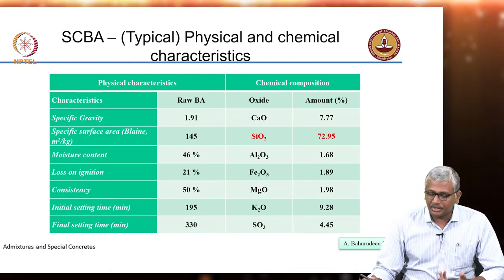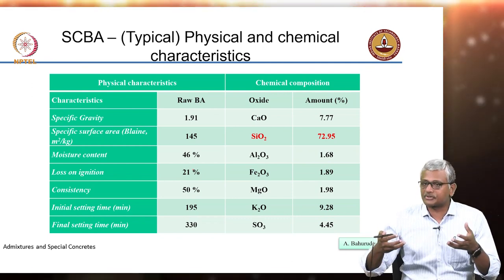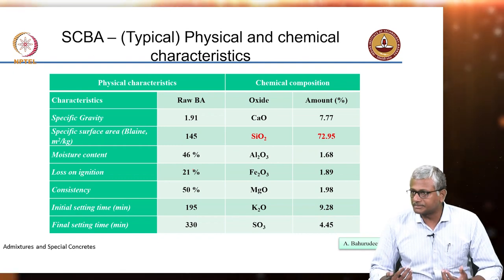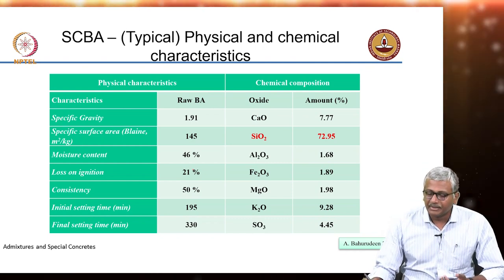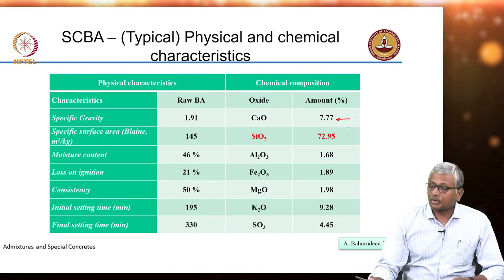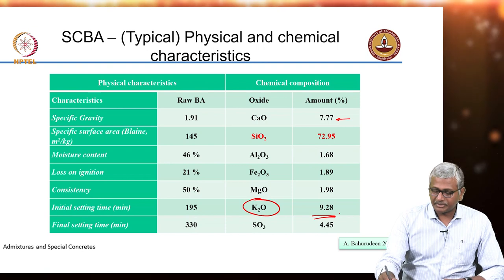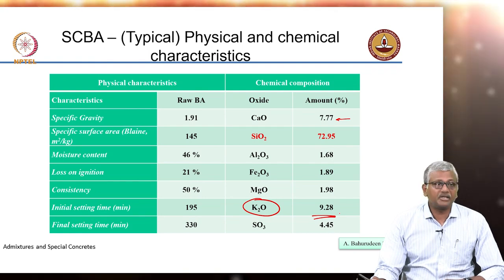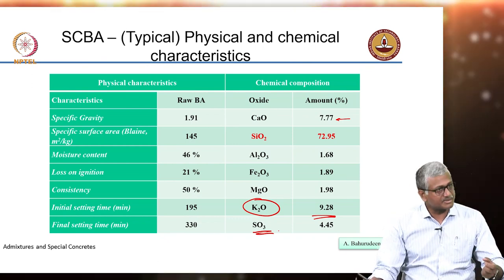So what does bagasse ash contain? It is a silica-rich material. As plants absorb nutrients from the soil they also absorb a lot of silica, which strengthens the plant structure. The organic components get removed by processing; the inorganic components are mainly silica. Some calcium may be present but not always. Generally they will have a lot of alkali present, and alkali content of such agricultural ashes is going to be significantly high, possibly coming from fertilizers and the soil.